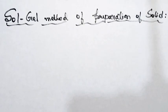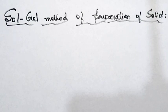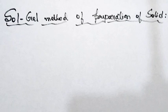Hello students. In this video we will study the sol-gel method of preparation of solids. In previous videos we talked about the ceramic method and chemical vapor deposition (CVD). There are mainly four methods: ceramic method, sol-gel method, precursor method, and CVD. Out of these four, we studied the ceramic method and CVD. In this video we will mainly see the sol-gel method.